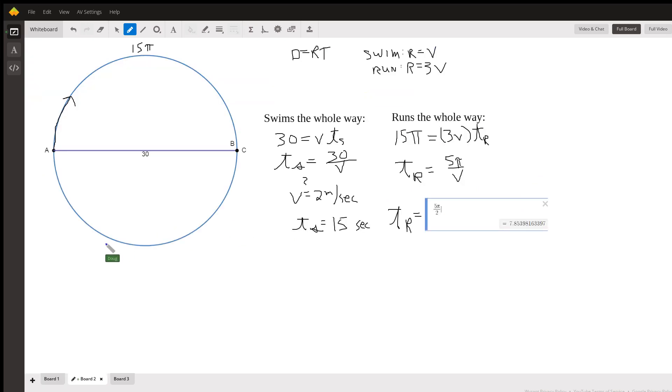Just to get a feel for what's going on, we're going to be using distance equals rate times time. We're told that the rate at which he swims is given by the variable v, and he runs three times as fast as he can swim. So if he swims the whole way, that means he's swimming 30 meters at a rate of v. Since distance equals rate times time, the time to swim is 30 divided by v.